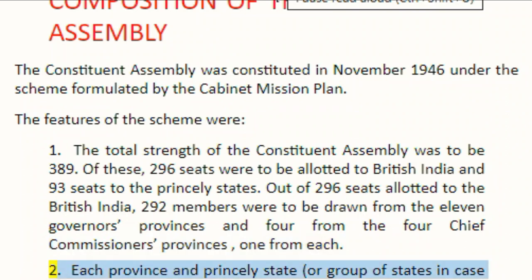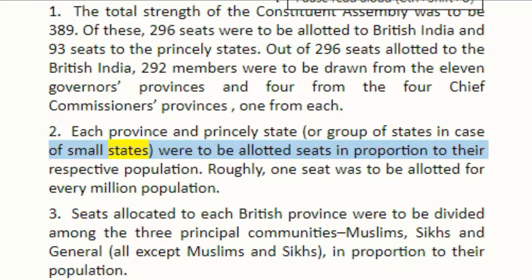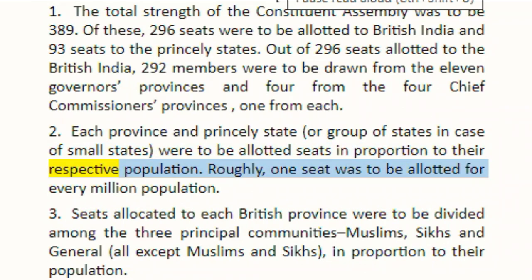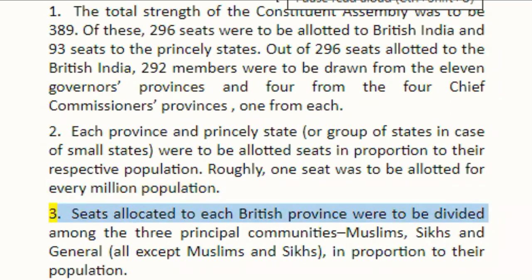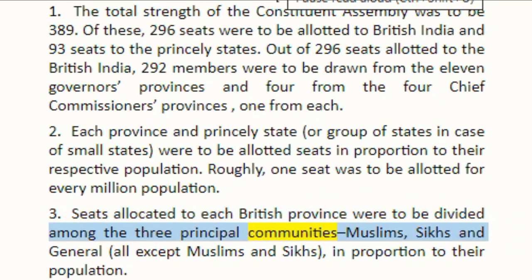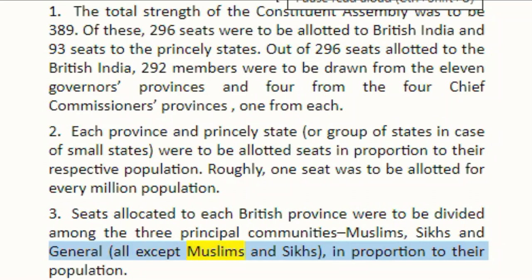Out of 296 seats allotted to British India, 292 members were to be drawn from the 11 governors' provinces and 4 from the 4 chief commissioners' provinces, 1 from each. Each province and princely state, or group of states in case of small states, were to be allotted seats in proportion to their respective population. Roughly, one seat was to be allotted for every million population. Seats allocated to each British province were to be divided among the three principal communities — Muslims, Sikhs, and general — in proportion to their population.